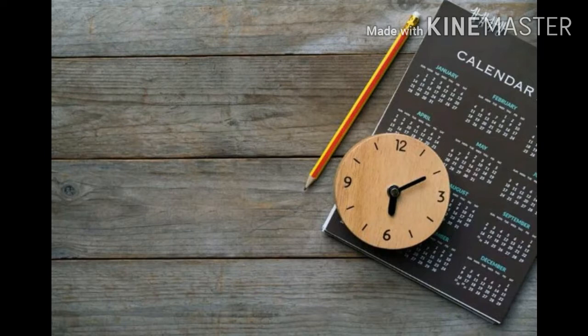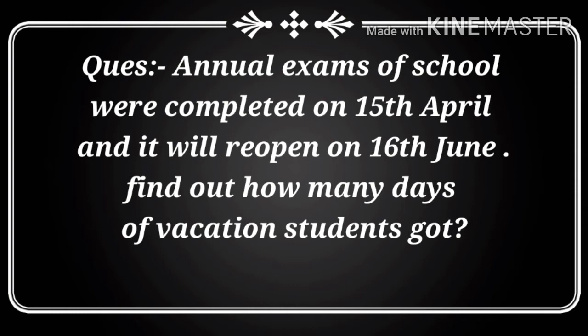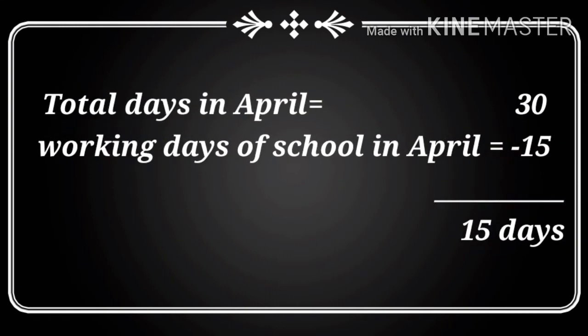We often hear that there is a vacation of 21 days for Diwali, or school will reopen on 16th June after a summer vacation of two months. Now let us find out how these are calculated. The annual exam of the school was completed on 15th April and it will reopen on 16th June — find out how many days of vacation students got. Total days in April is 30. The exam was held till 15th April, so 30 minus 15 equals 15 days vacation in April.